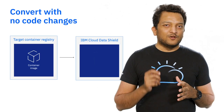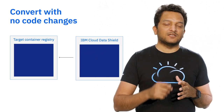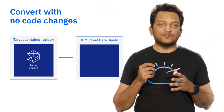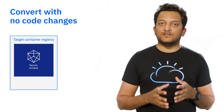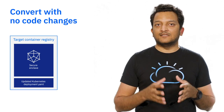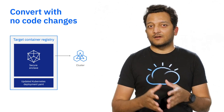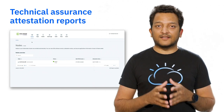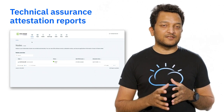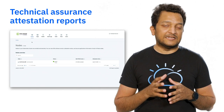Data Shield pulls your container image from your registry, converts it, and pushes the new image back to your registry without you having to make any code changes. You can then update your Kubernetes deployment YAML and deploy your new runtime memory-encrypted application to your cluster. Data Shield also takes the complexity away from attestation and presents you the attestation report through a public key infrastructure that runs native to your cluster.